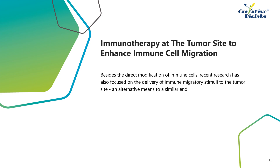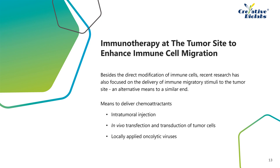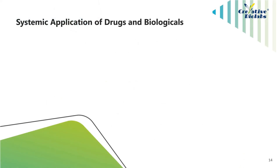Recent research has also focused on delivery of immune migratory stimuli to the tumor site. There are multiple means to deliver chemoattractants, including intratumoral injection, in vivo transfection and transduction of tumor cells, and locally applied oncolytic viruses. A potential limitation of intratumoral injection and in vivo transfection is that immune effector cells are only recruited to directly targeted lesions, leaving metastases in other locations untreated. The gene delivery approach using oncolytic viruses, on the other hand, is associated with concerns about off-target infection.